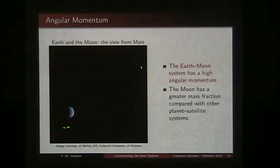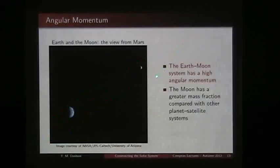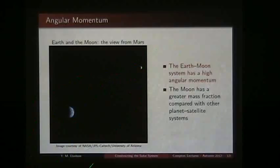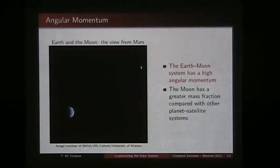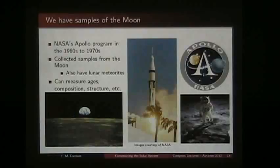The first observation is a view from Mars showing Earth and the moon and their relationship to each other. The angular momentum of the Earth-Moon system is very high compared to other planet-satellite systems. If you removed the moon completely, the Earth would have to spin once every four hours or so to conserve that angular momentum. Coupled with that, the moon has a much greater mass compared to the Earth than most other satellites we know of in the solar system — other than maybe Pluto and Charon.